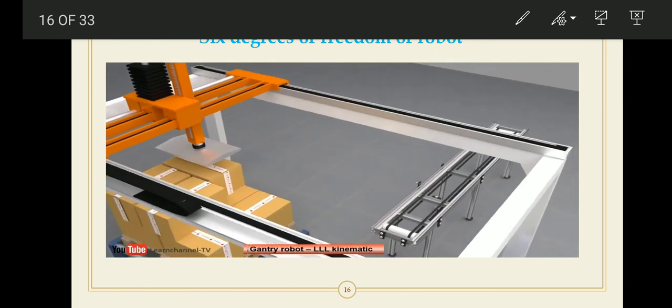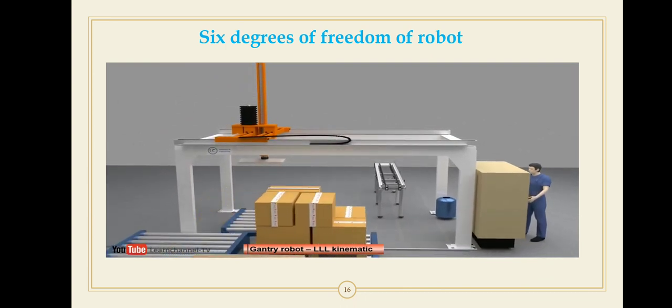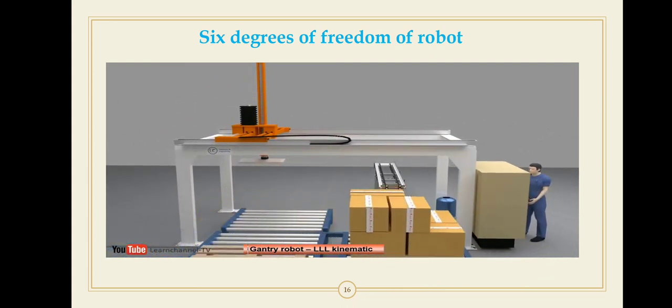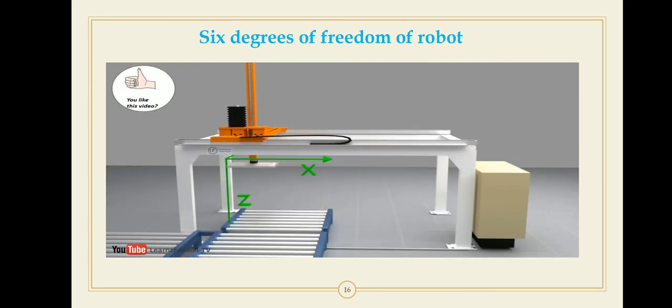Gantry robots are easier to program with respect to motion because they work with an XYZ coordinate system. The workspace has the shape of a rectangle.